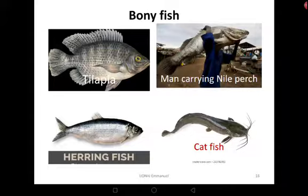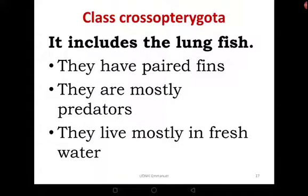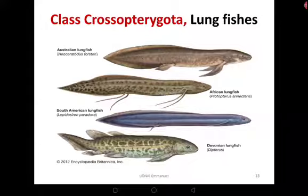Another class is Crossopterygii, which includes the lungfish. Members have paired fins, are mostly predators feeding on smaller organisms, and are mostly freshwater dwellers. The African lungfish is common in swamps — they can burrow deep in mud and have sharp teeth-like structures, reflecting their predatory behavior.